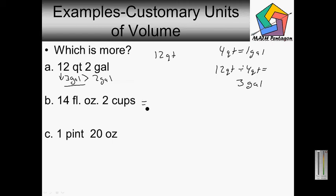Let's go to the next one. We have 14 fluid ounces and 2 cups. Let's convert the cups into ounces. We know that 1 cup is equal to 8 ounces, and then the second cup is going to be 16 ounces. So 2 cups is equivalent to 16 fluid ounces.